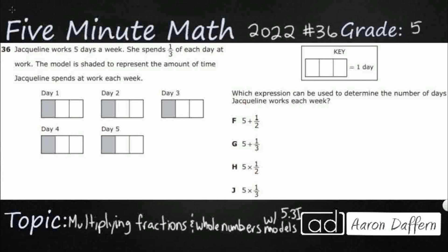So Jacqueline works five days a week. She spends one-third of each day at work, and the model is shaded to represent the amount of time that Jacqueline spends at work each week. We've got day one — Monday, Tuesday, Wednesday, Thursday, Friday — and as we can see, we've got one-third shaded for each.